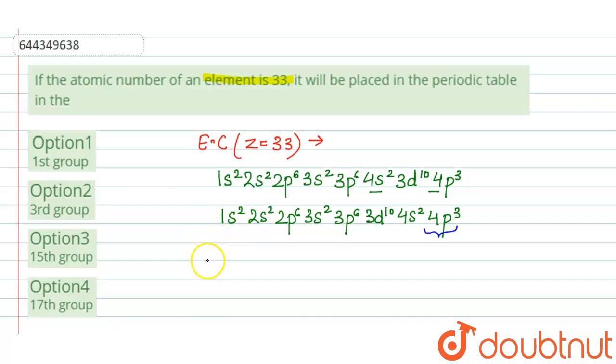this element with atomic number 33 is a p-block element. For p-block elements, if we want to find out the group number, how do we find that?